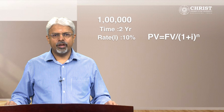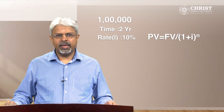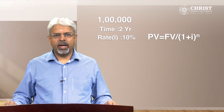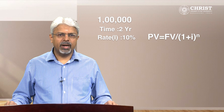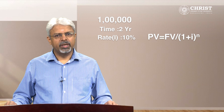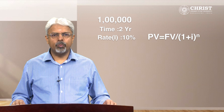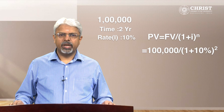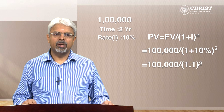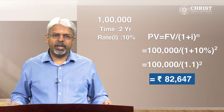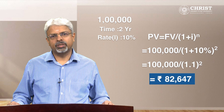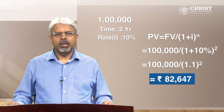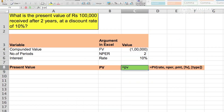We know the formula for this: Present Value PV equals Future Value FV divided by (1 + i) raised to n, where i is the interest rate per annum and n is the number of years. In this example, FV would be 1 lakh rupees, i would be 10 percent, and n would be 2 years. By substituting the numbers in the formula we get an answer of rupees 82,647.